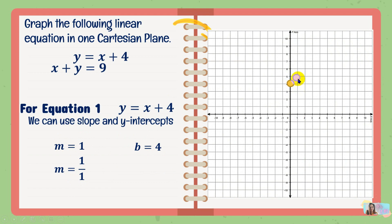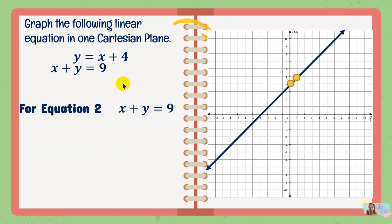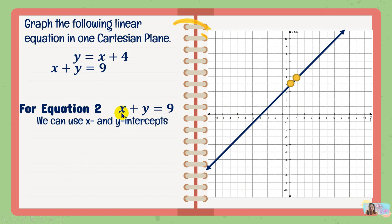There you go. The second point is at 1 and 5. Then we draw the straight line passing through the two points, extending it across the Cartesian plane. From here, we graph the second equation. The second equation is x plus y equals 9, and we can use x and y intercepts since the numerical coefficients of x and y are both 1.